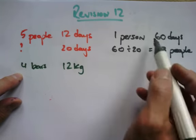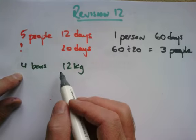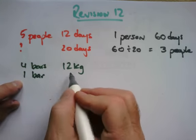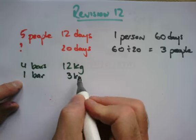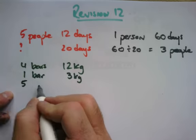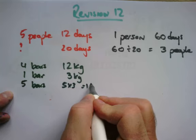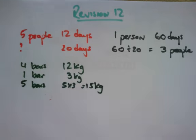So this was an inverse, indirect proportion. This is direct. So it's basically one bar, again unitary method, would weigh three kilograms. So five bars would be five lots of three, 15 kilograms.